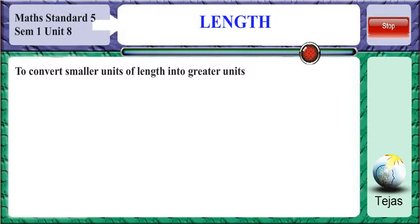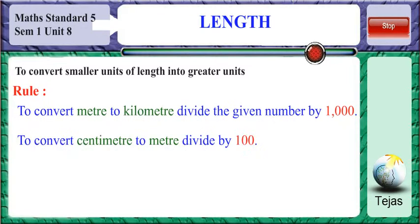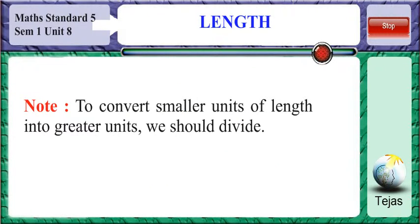Now let us see how to convert smaller units of length into greater units. To convert meters to kilometers, divide by 1000. To convert centimeters to meters, divide by 100. To convert millimeters to centimeters, divide by 10. In order to convert smaller units into greater units, we should divide.